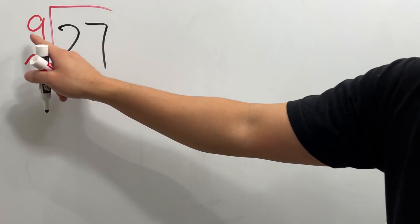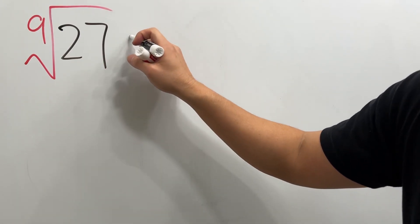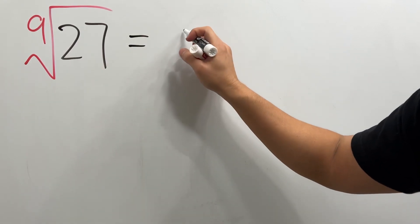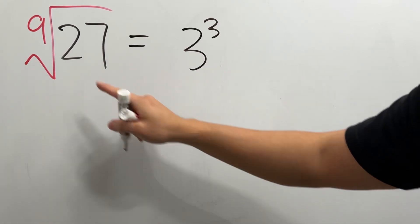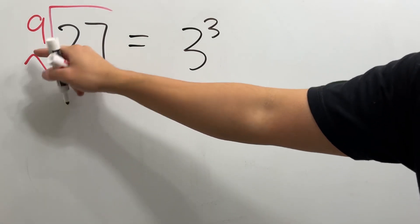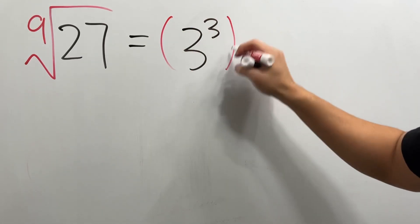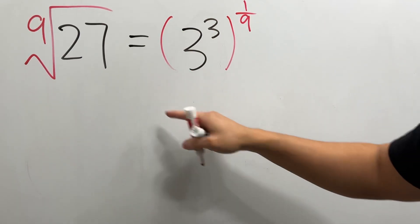How do we reduce the 9th root of 27? Here's the deal. Write 27 as 3 to the 3rd power, and then the 9th root is the same as the 1 over 9 power.